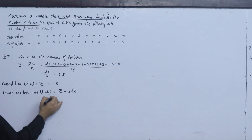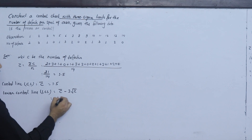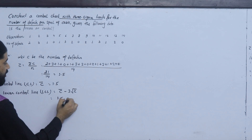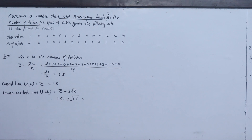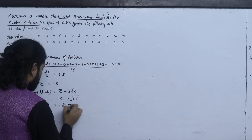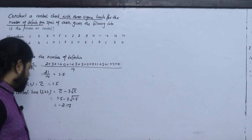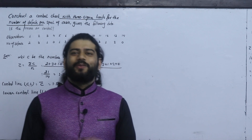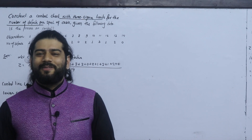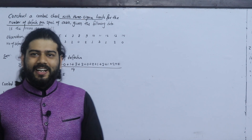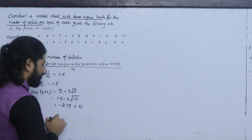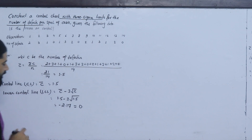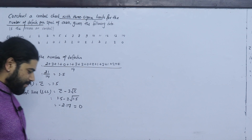We have the condition that LCL equals 1.5 minus 3 times the square root of 1.5. This value is minus 2.17. Now the number is negative, so LCL is equal to 0.